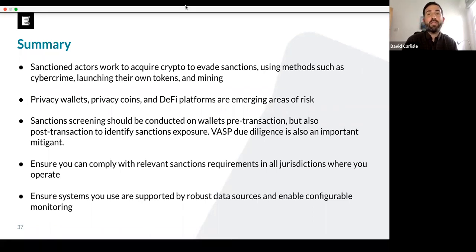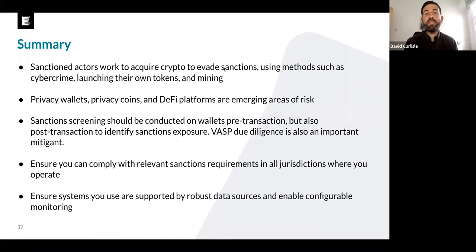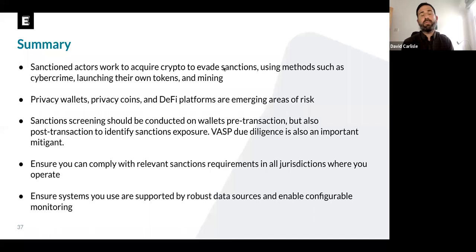We've got some time for questions. Someone asked: does Elliptic screen other sanctions lists like the EU for sanctioned addresses or individuals? The answer is yes — our screening solutions can screen not just against the OFAC list, but also for entities on the EU, UN, Australia, Canada, and a number of other widely utilized sanctions lists. Another question: do our screening tools allow a sandbox environment where you can test rules and settings? The answer is also yes — we really encourage this element of testing and refining when it comes to things like your risk rule configuration.